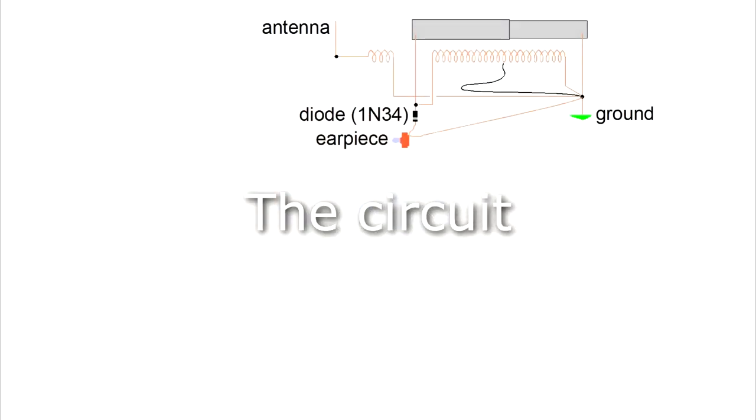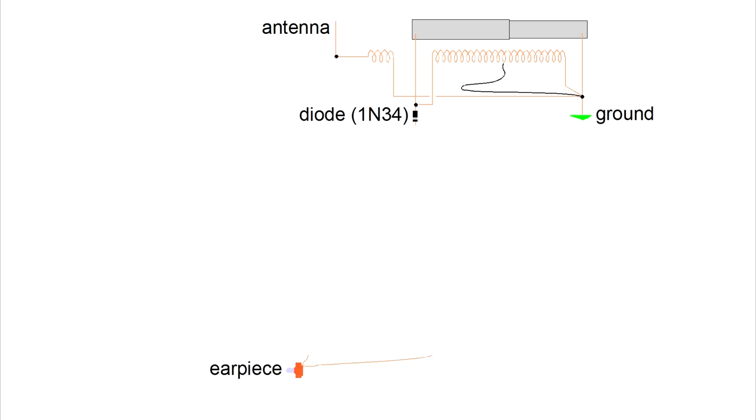We start with the crystal radio circuit I showed in my How to Make a Crystal Radio video. I won't be discussing those parts here. Instead, I'll focus on the stuff we'll add. Since we're amplifying the output for the earpiece, we'll separate it from the circuit. We'll also redraw the earth ground connection. The stuff for amplifying the signal will go here.